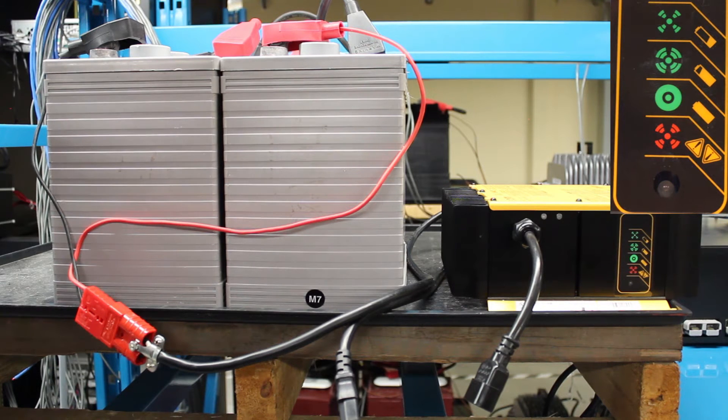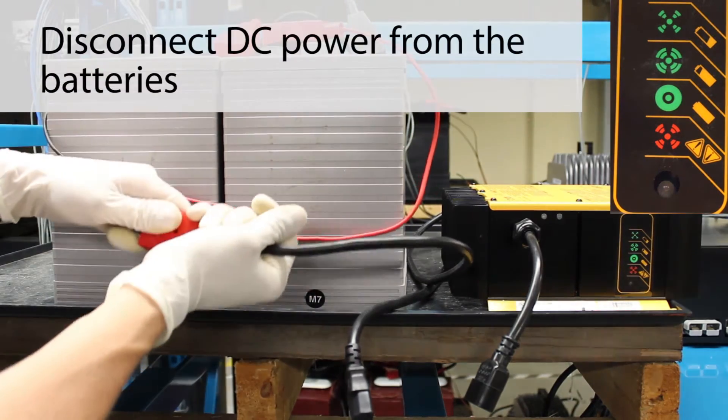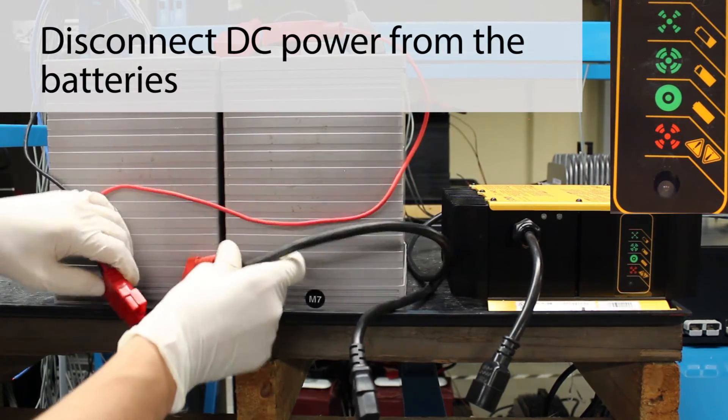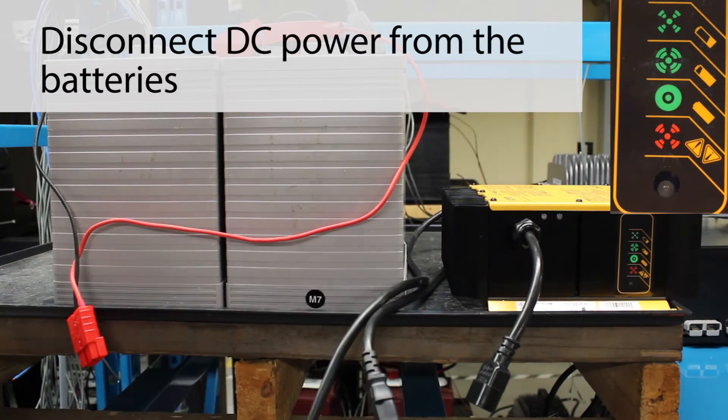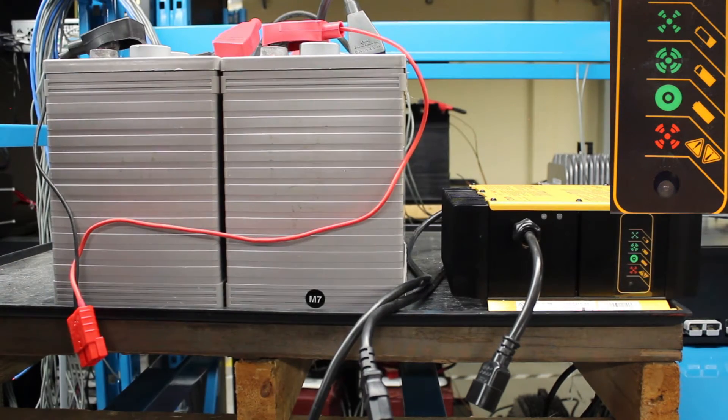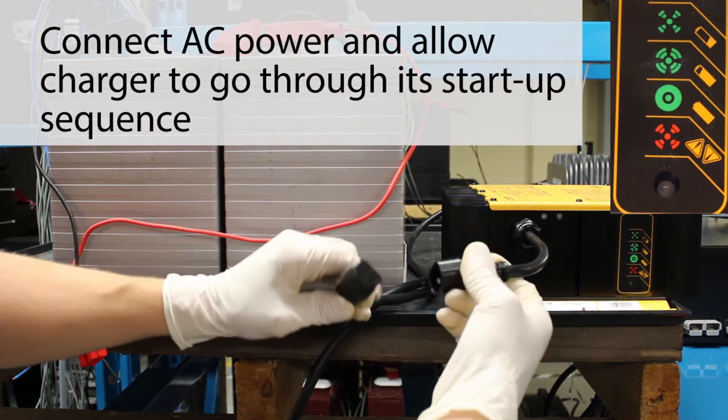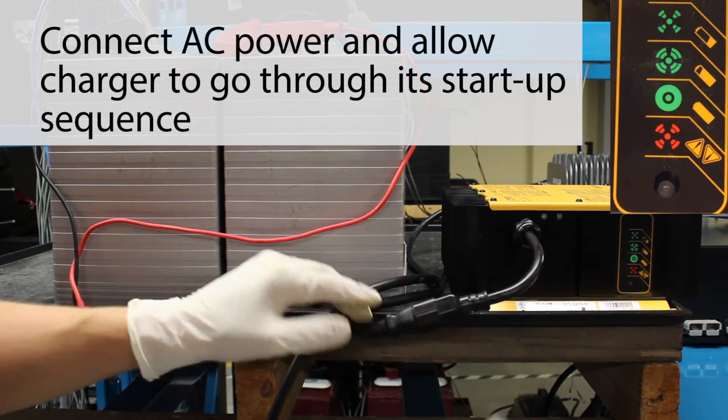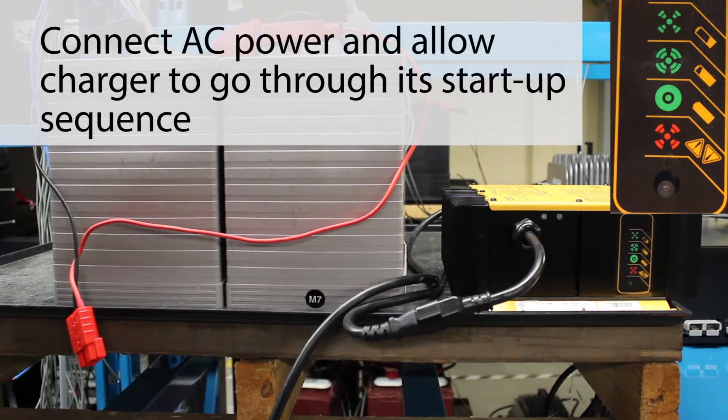The first thing we need to do is check the default charge profile. To do that, disconnect DC power from the batteries. Connect AC power to the charger, and let the charger go through its startup sequence.